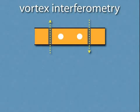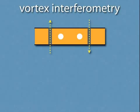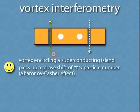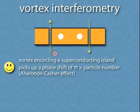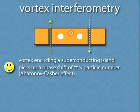Now, we would like to read out the state without actually counting the electrons, and the way to do this is through an effect called the Aharonov-Casher effect. The Aharonov-Casher effect states that a vortex encircling a superconducting island would pick up a phase shift which is determined by the parity of the number of particles inside the island.